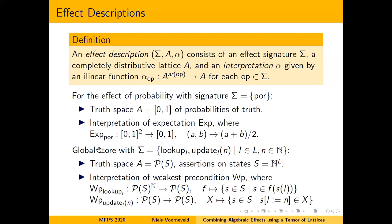For global store, the truth space consists of assertions over states, where a state is a map from locations to natural numbers. A property is satisfied by specifying the set of states where it holds. We give the weakest precondition interpretation: the local function for lookup states that a state is correct if it is correct for the continuation corresponding to the stored value; the local function for update states that a state is correct if the state after being updated is correct for the single continuation.